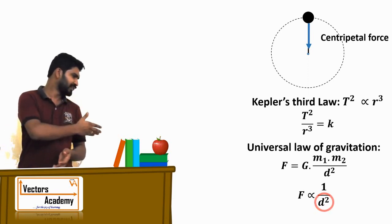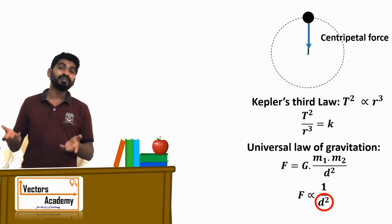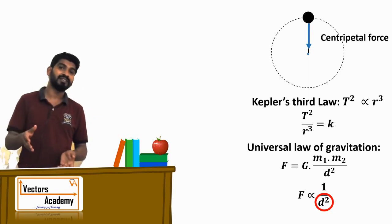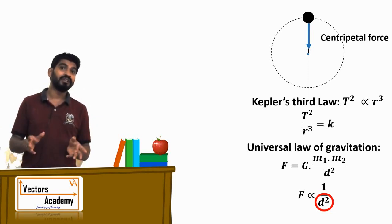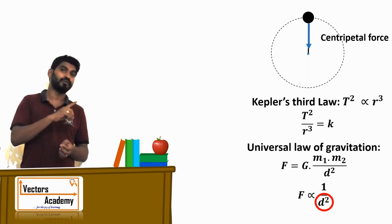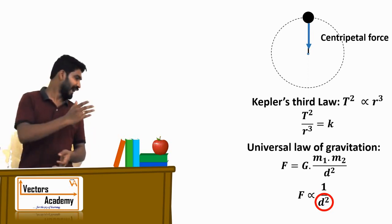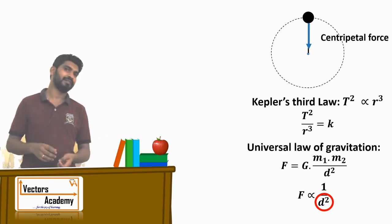How did Newton arrive at this conclusion that force is inversely proportional to the square of the distance? Newton used Kepler's laws as well as the formula for centripetal force to arrive at this conclusion. Let us see how he did it.